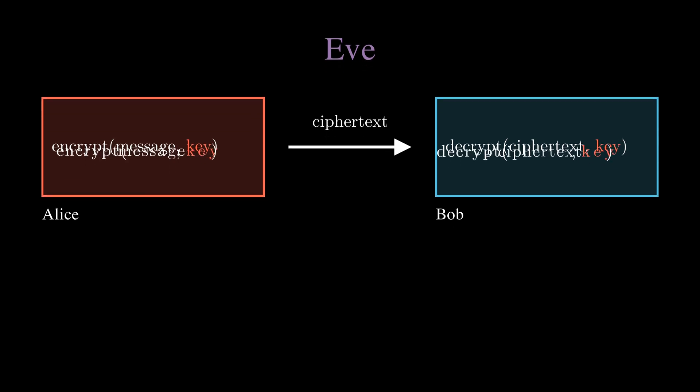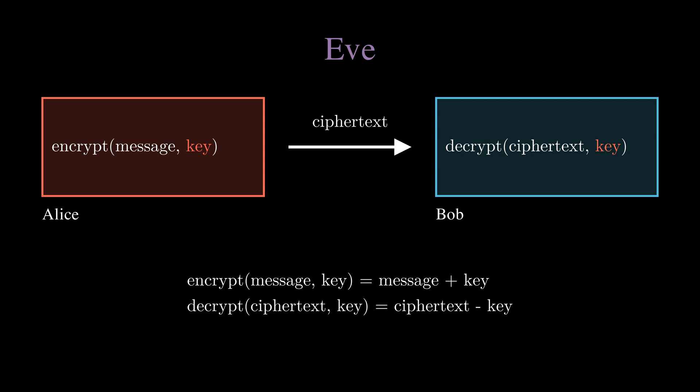As an example, the most basic encryption would be adding the key to the plaintext for the encrypt method and subtracting the key from the ciphertext for the decrypt method. Even though they are called text, for almost all purposes they are converted into integer numbers. In order for Alice and Bob to use this system, they would have to agree upon a key beforehand, like 3.